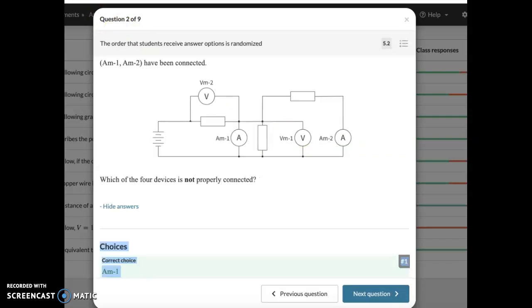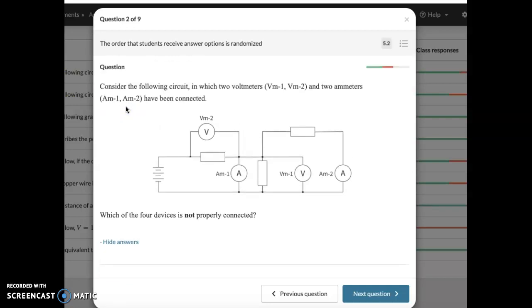Now, this is a scary looking question, but focus on the facts. We have a circuit which has a bunch of voltmeters, VM1 and VM2, and a bunch of ammeters, AM1 and AM2, connected. Which of the four devices is not properly connected? Voltmeters are always in parallel. They're always in parallel to the thing that they're analyzing. And ammeters are always in series.